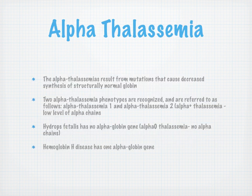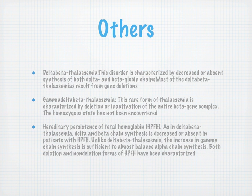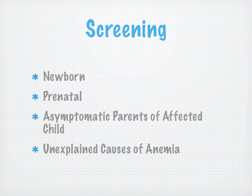In the homozygous state, beta thalassemia reveals two major types: beta-plus, where they have suboptimal beta chains, and beta-zero, which is a total absence of beta chains. There's also delta-beta thalassemia, gamma-delta-beta thalassemia, and hereditary persistence of fetal hemoglobin — but those are beyond the scope of this class.